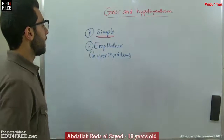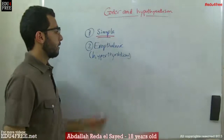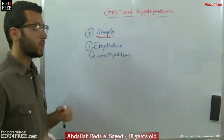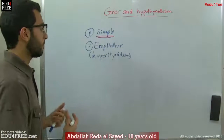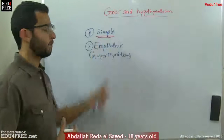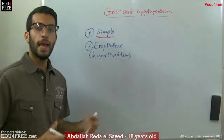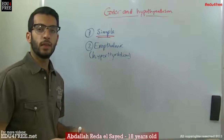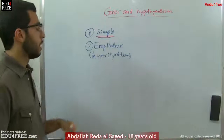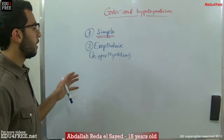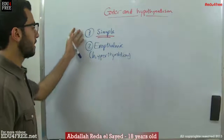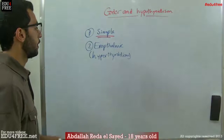The second type is the Exophthalmic Goiter. This is more apparent than the Simple Goiter and it is related to the protrusion of the eyeballs, making it pretty much more obvious than the Simple Goiter.